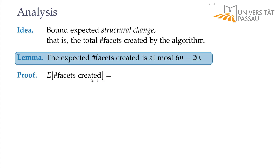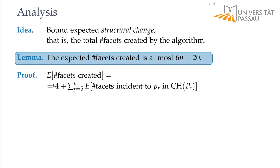So the number of facets in total is 4 for the first step, and then for all other steps r equals 5 to n, we count the number of facets that are incident to the r-th point in the convex hull of the first r points. What we want to bound is: if I take the convex hull of the first r points, what is the expected number of facets incident to one of the random points?